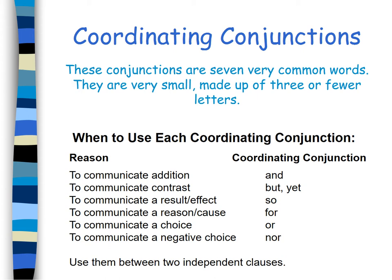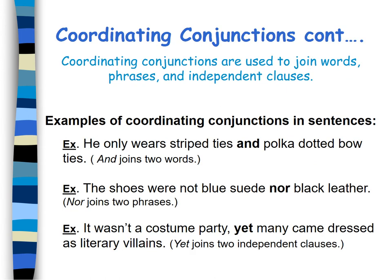Use them in between two independent clauses. An independent clause is a clause that makes sense by itself and can stand alone, because it has a subject, a verb, and it makes a complete idea. Coordinating conjunctions are used to join words, phrases, and independent clauses.